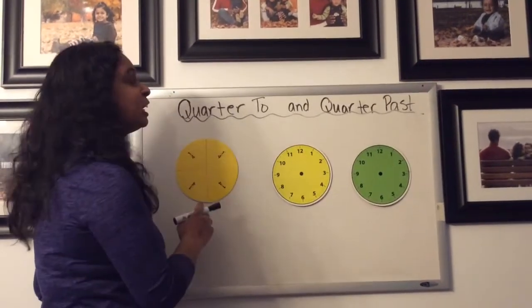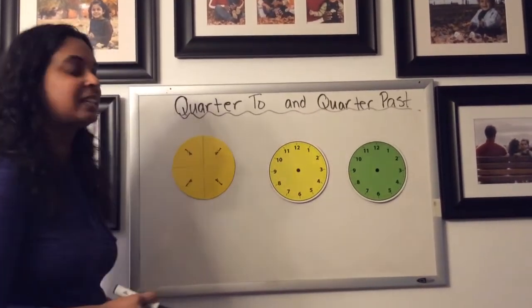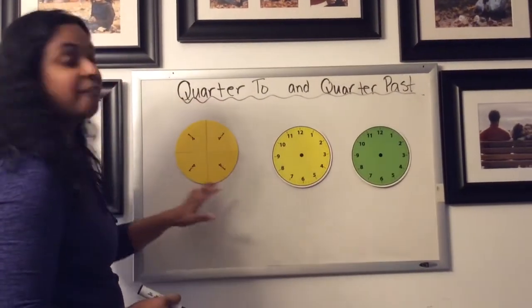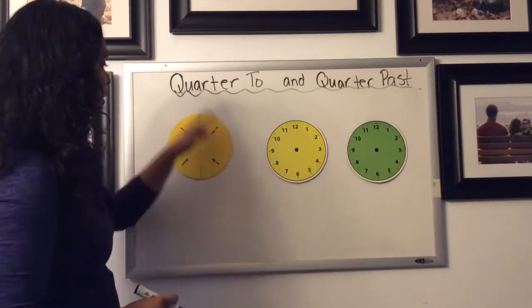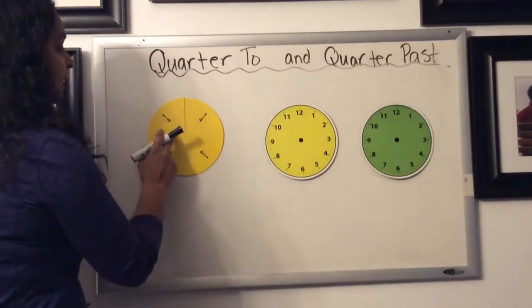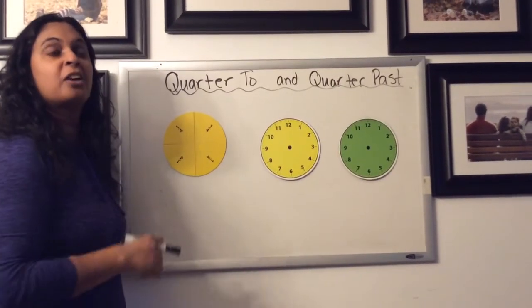Today I want to talk to you specifically about these words here, quarter to and quarter past. I'm going to show you where that came from by first showing you a fraction model. This is a fraction circle or a fraction pie, and as you can see, this pie has been cut into fourths. We also call that quarters.